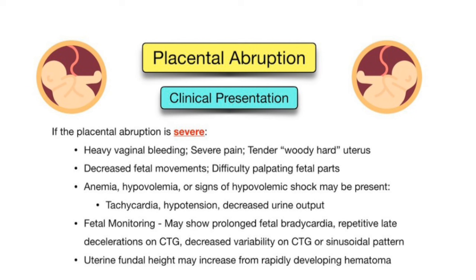Pain is sudden in onset, constant and persistent, and localized to the lower back and uterus, with uterine tenderness. Uterine contractions occur at high frequency due to placental separation. Fetal distress is also an important finding.